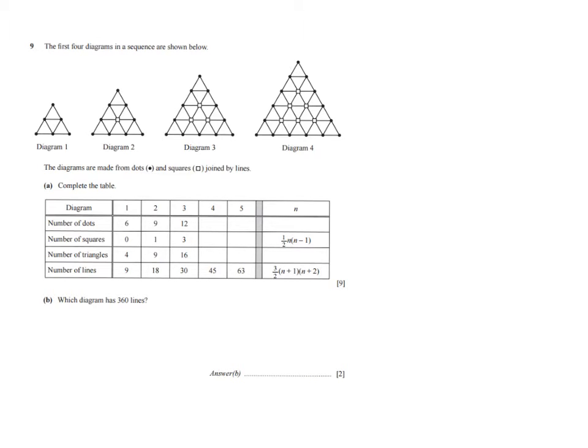Now do not let this put you off - this doesn't mean it is difficult, it just means it's worth a lot of points. Let's see what is going on. The first four diagrams in the sequence are shown below - diagram one, two, three, and four. As you can see, some sort of triangles, I see dots, I see lines, and I see squares there in the middle.